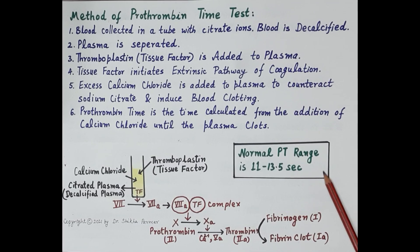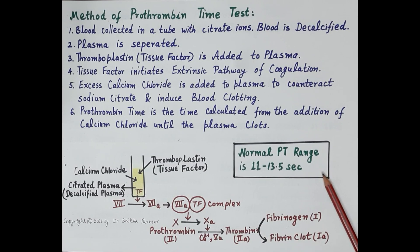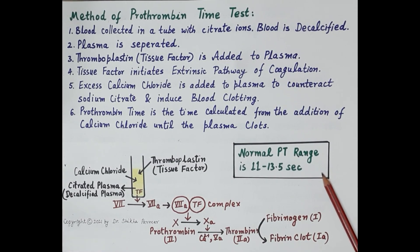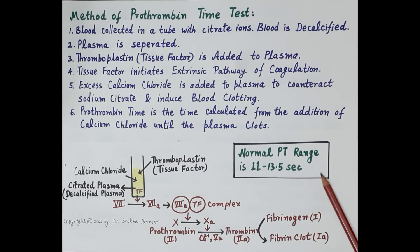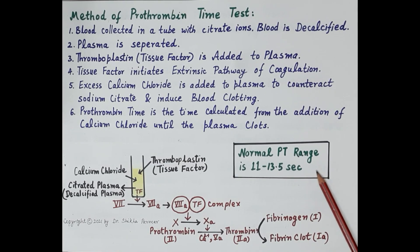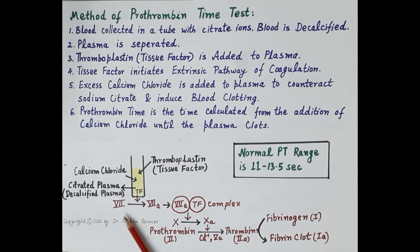Normal prothrombin time ranges from 11 to 13.5 seconds — that is normally how long the extrinsic pathway of coagulation takes for the blood to clot. Administration of oral anticoagulants such as warfarin will increase the prothrombin time because warfarin inhibits clotting factors 2, 7, and 10.